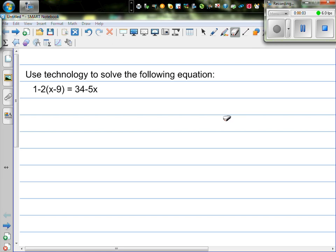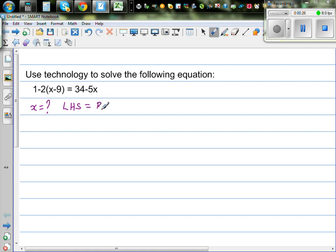Use technology to solve the following equation. So this equation tells us that 1 minus 2 times x minus 9 is 34 minus 5x. So let us understand what this equation is. So there is some value of x. For some value of x, your left hand side is going to be equal to right hand side.